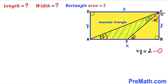Let's focus on triangle AEC. We can see this is an isosceles triangle since angle ACE is 15 degrees and angle CAE is 15 degrees as well. Since this is an isosceles triangle, side length AE is going to be equal to side length EC.